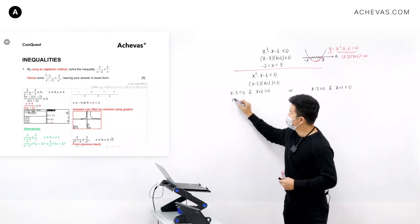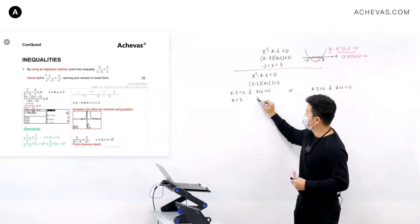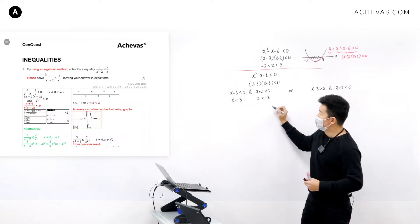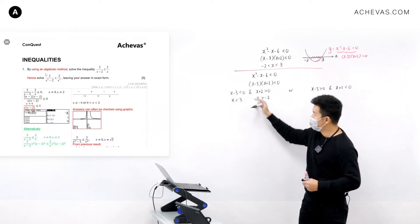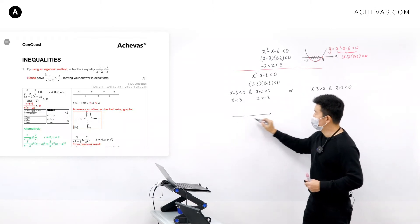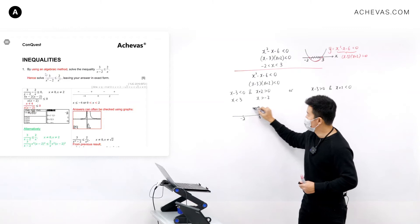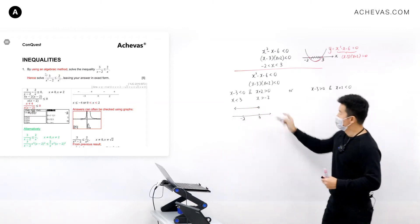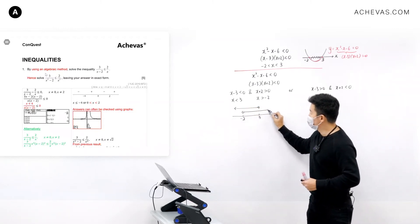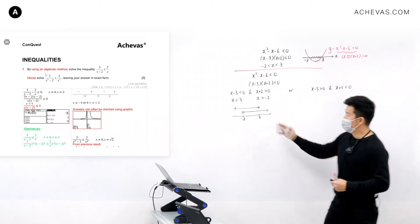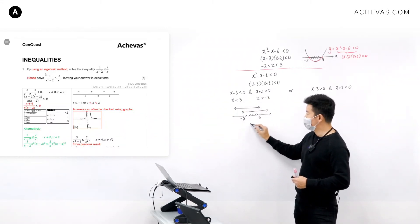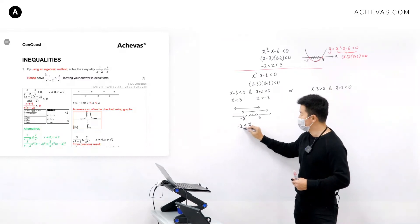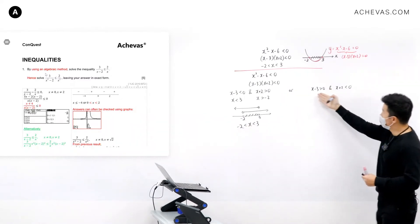For Case 1, that means x has to be less than three and x has to be bigger than minus two. I analyze these two relationships using an AND relationship. Drawing a number line with minus two and three, I look for the overlapping region where x is strictly between minus two and three.